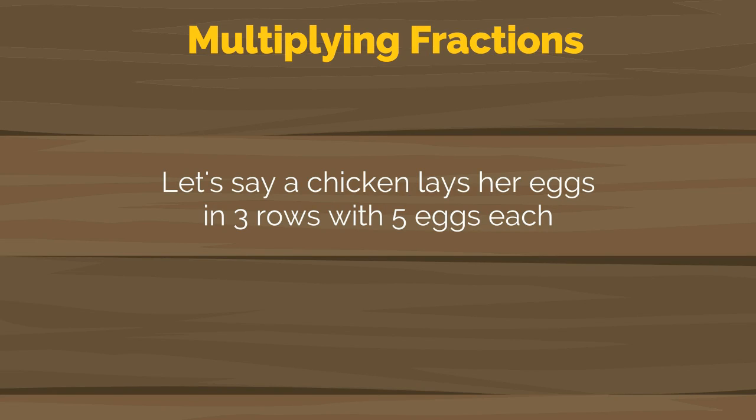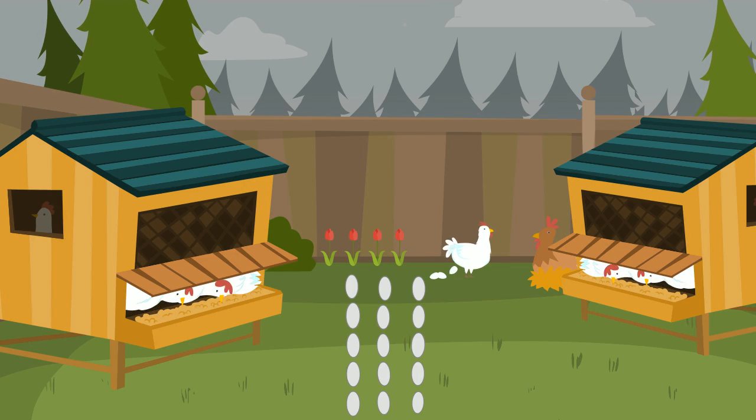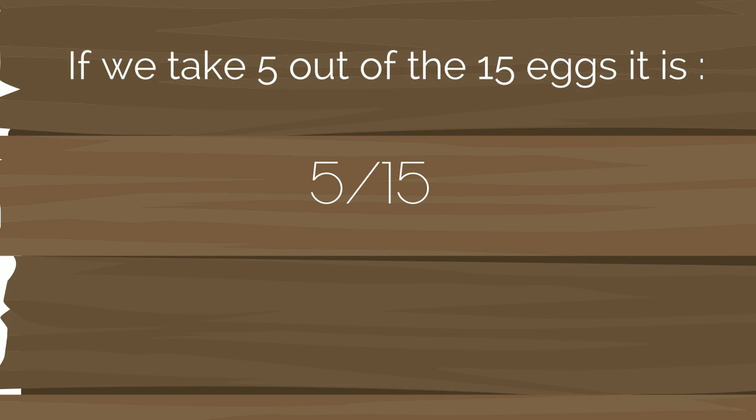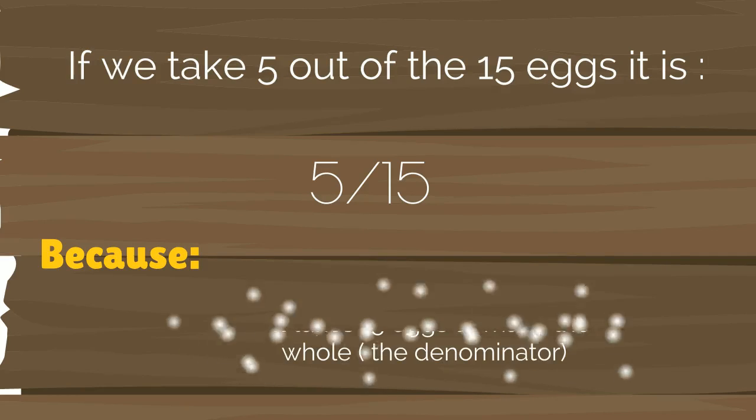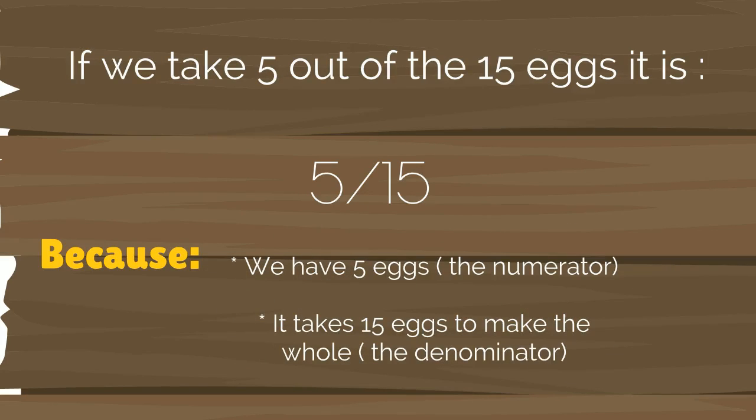Multiplying fractions. Again, let's say we have another chicken and she likes her eggs in 3 lines of 5 eggs each. If we take 5 out of 15 eggs, it is 5/15. Because we have 5 eggs, the numerator, and it takes 15 eggs to make the whole, the denominator.